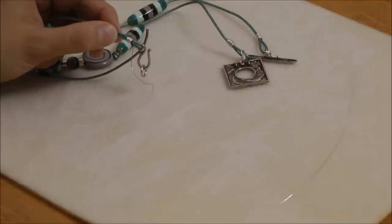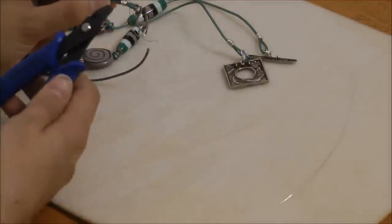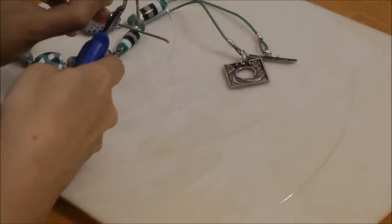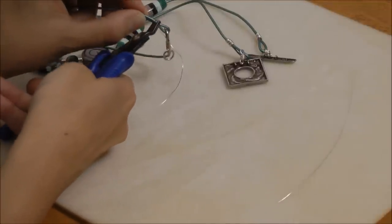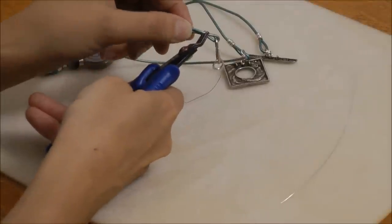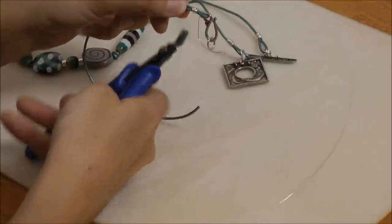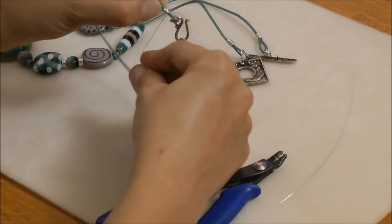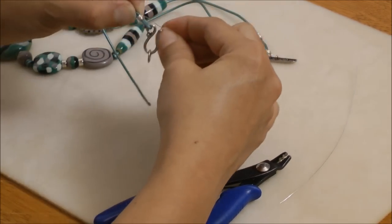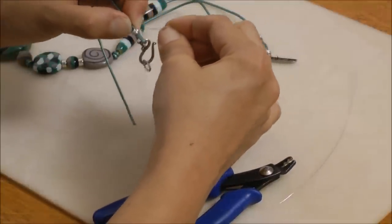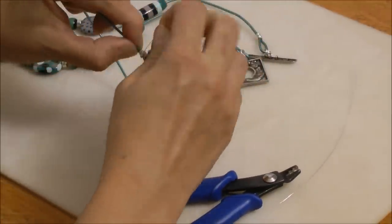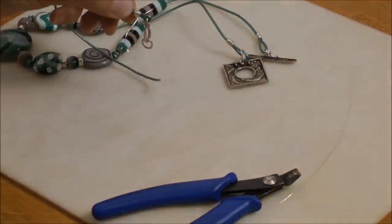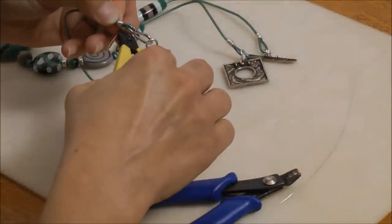I can use my crimping pliers if I want to, to use that little bit of curvature to curve that end further around the loop, and then I'm going to take the other tail end and wrap that one as well. Once I've wrapped it, and it's secure, I can just go ahead and trim off any wire ends.